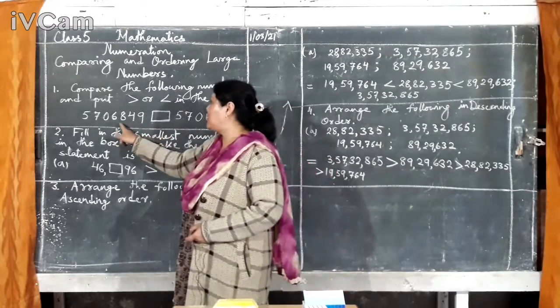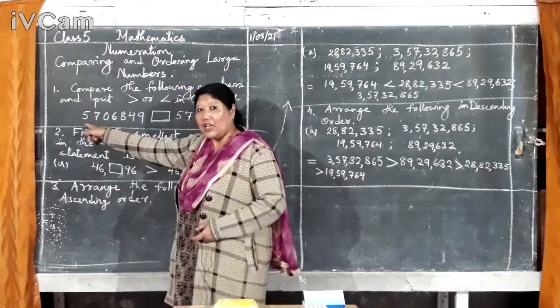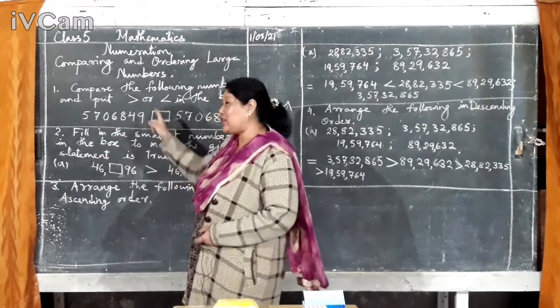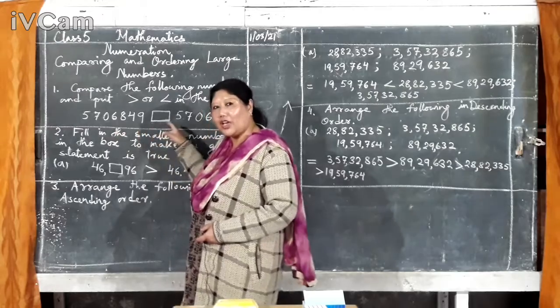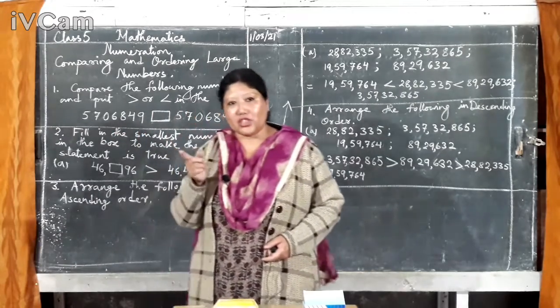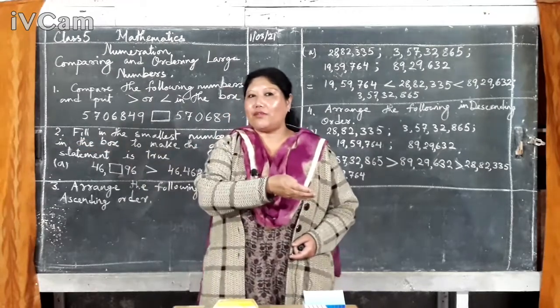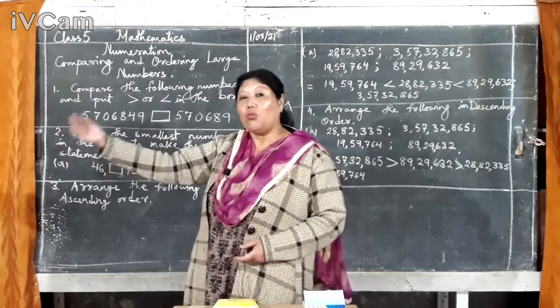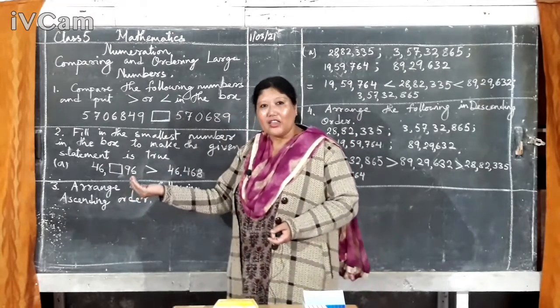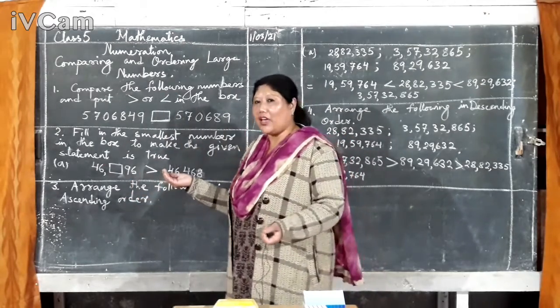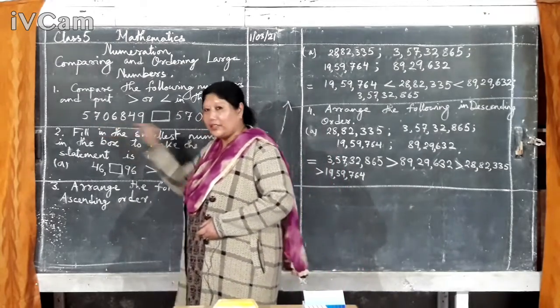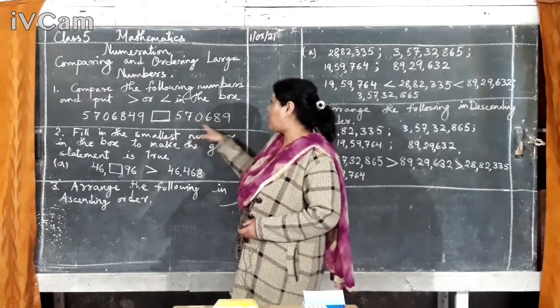First step is you count the number of digits. You know the digits 1, 2, 3, 4, 5, 6, 7. Your 7 digit number. This is a number but it contains 7 digits. So, first thing is you count the number of digits. If you have 6 digits this side, 5 digits, who is bigger? Now, compare the other one.